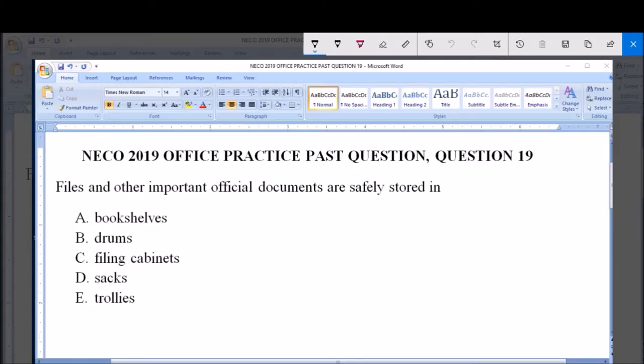Hello, good day and welcome. Today I'm going to be answering NECO 2019 office practice past question, question 19: Files and other important official documents are safely stored in A. book shelves, B. drums, C. filing cabinet, D. sacks, and E. trolleys.